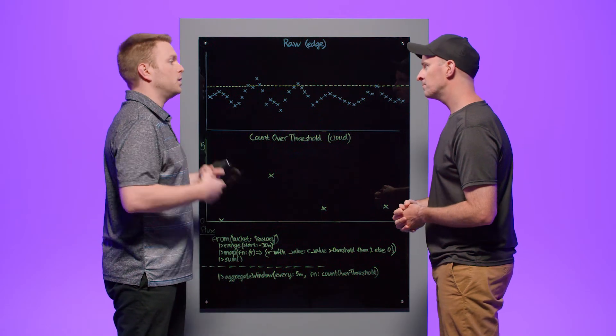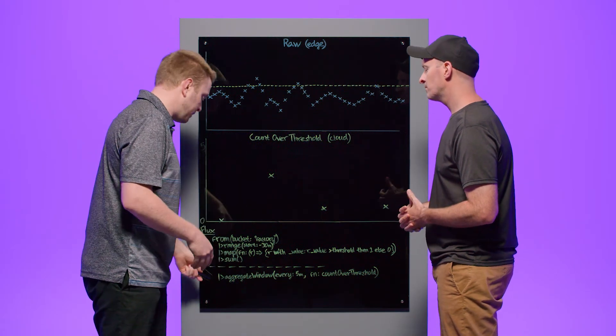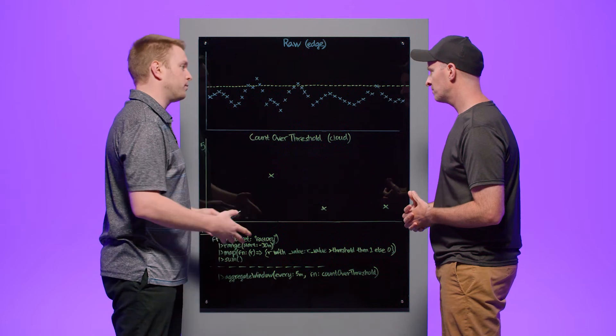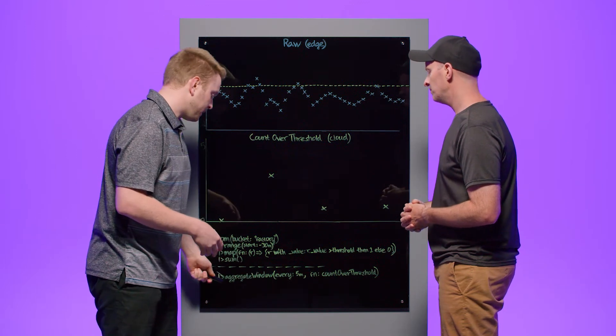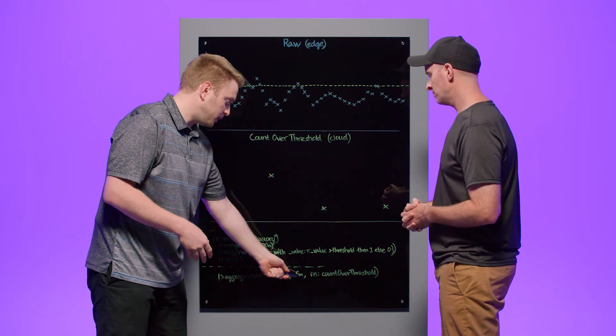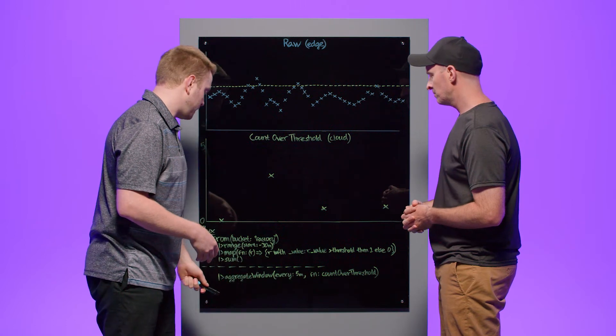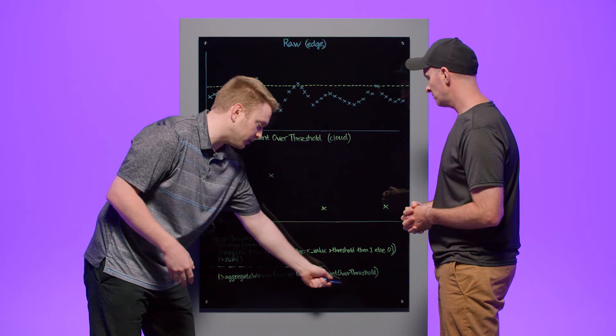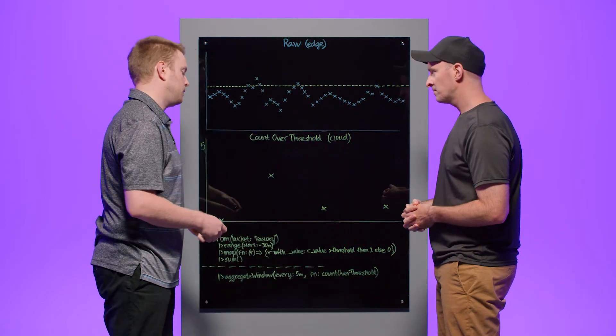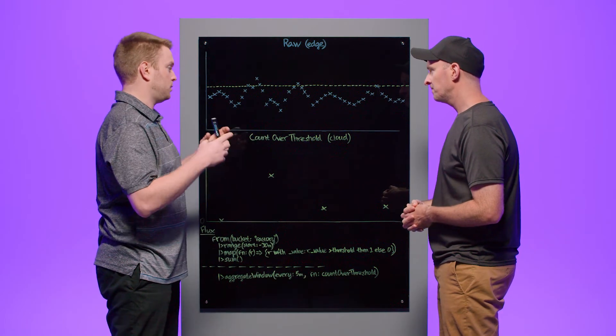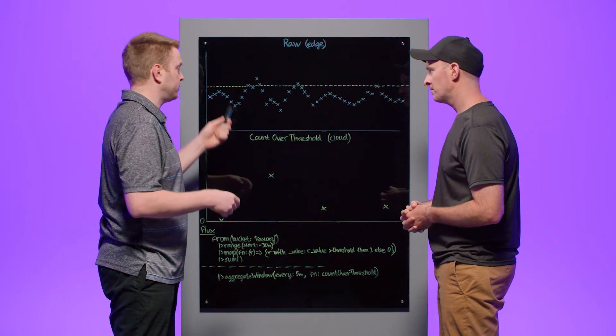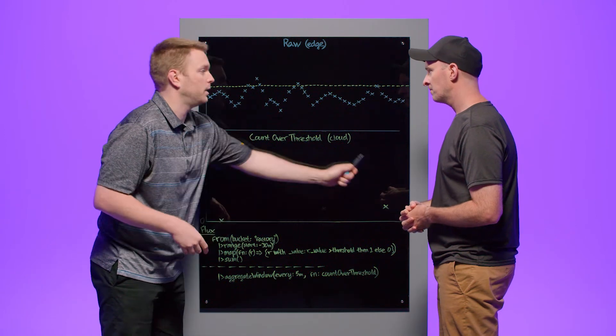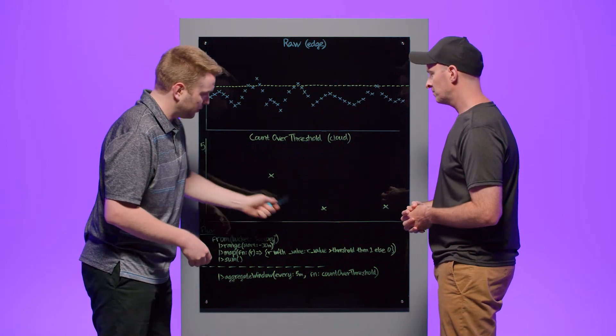So we have this function aggregate window which is a super performant windowing function in flux that defines windows. We'll call it five minutes here. We'll say that we're still looking back 30 minutes but we're defining windows of five minutes and feeding our new function that we've created, count over threshold, into that so that we're actually returning the counts of these times per time window. And that's what gives us this graph.